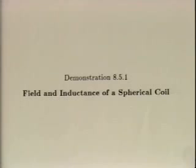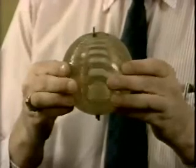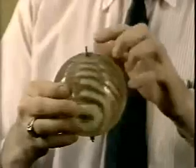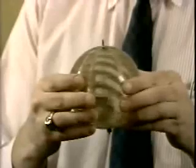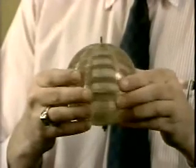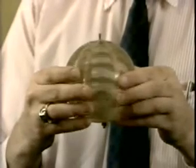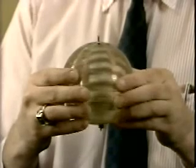The field and inductance of a spherical coil illustrate the model of a distributed surface current density and the associated Laplacian fields. This is a coil wound on the surface of a sphere. A current through the wire results in a magnetic field inside the sphere that is uniform; outside, the field is that of a dipole.